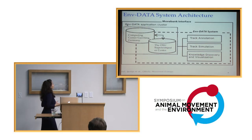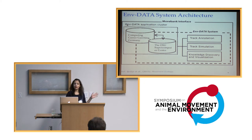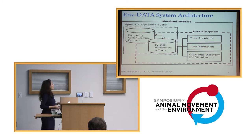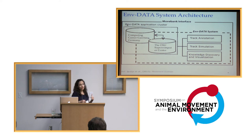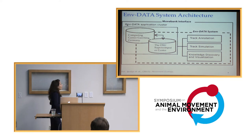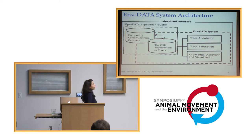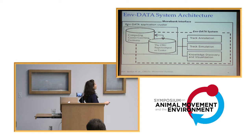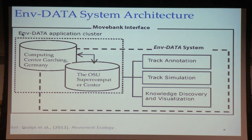The system runs on two supercomputers — one at the Max Planck Institute in Germany and another at Ohio State University. We collect environmental variables from different sources and annotate movement data with those environmental variables. So far we have a track annotation service in M-Data, and we're hoping to add track simulation, knowledge discovery, and visualization approaches later on.